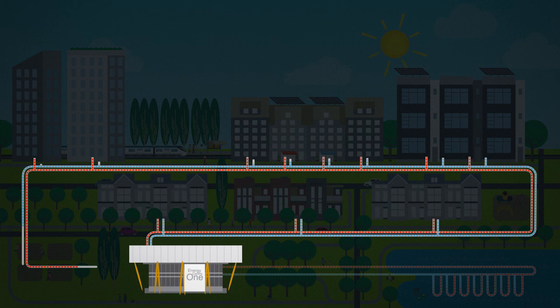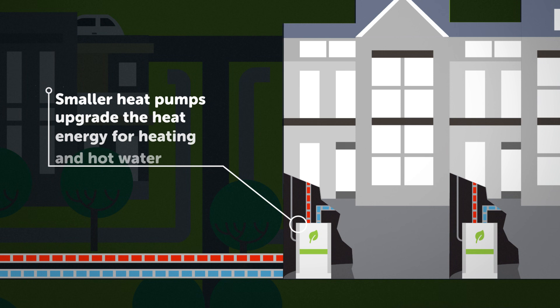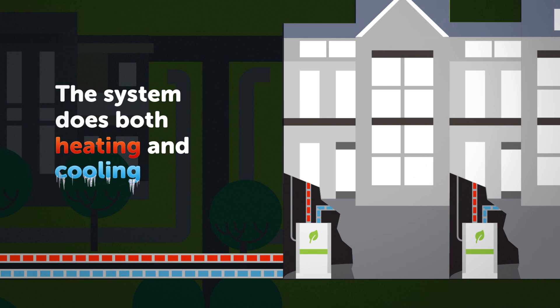This heat energy leaves the energy center and travels to buildings through a network of underground pipes. Smaller heat pumps in the homes upgrade this energy one more time for heating and hot water. The really cool part is that the system can also provide air conditioning.